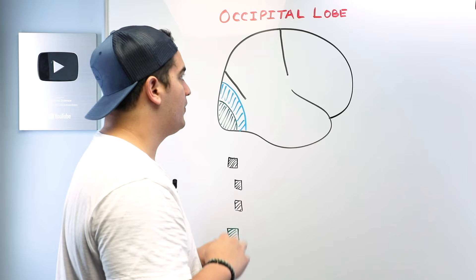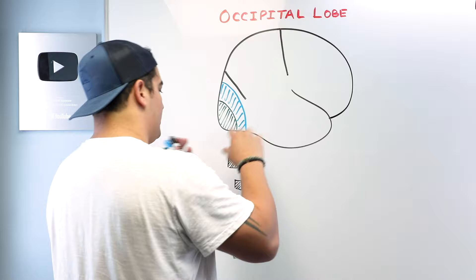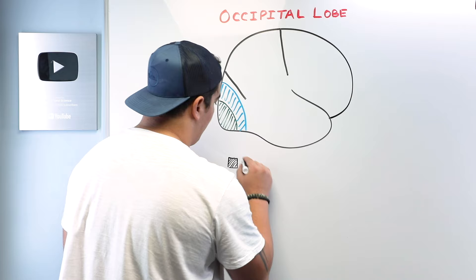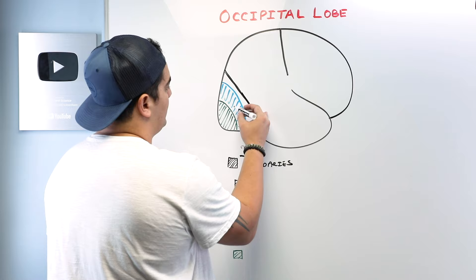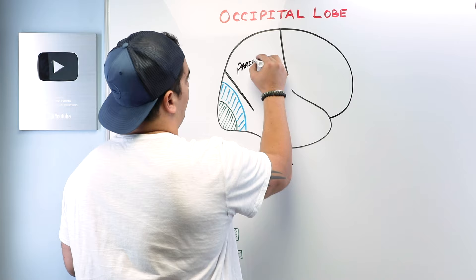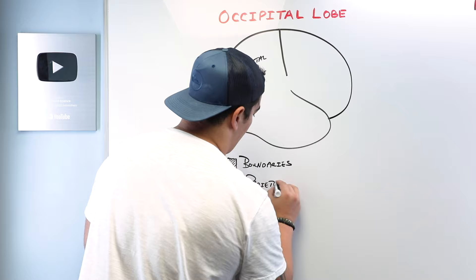So now let's talk about the occipital lobe. We have to understand first off its boundaries — how do we know where the occipital lobe starts and ends? One of the boundaries of the occipital lobe is this sulcus right here, which separates the occipital lobe from the parietal lobe. This sulcus is called the parieto-occipital sulcus.